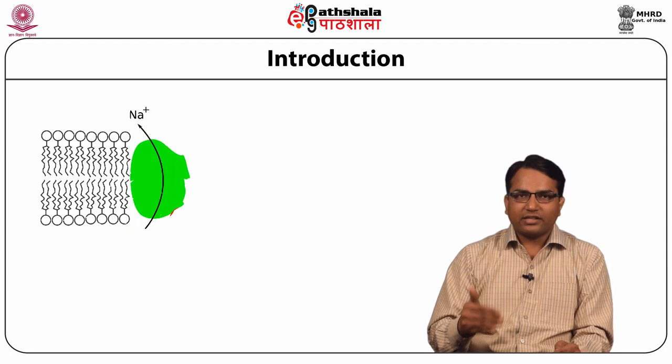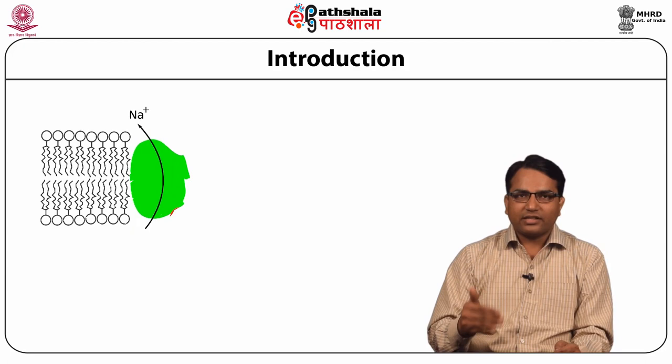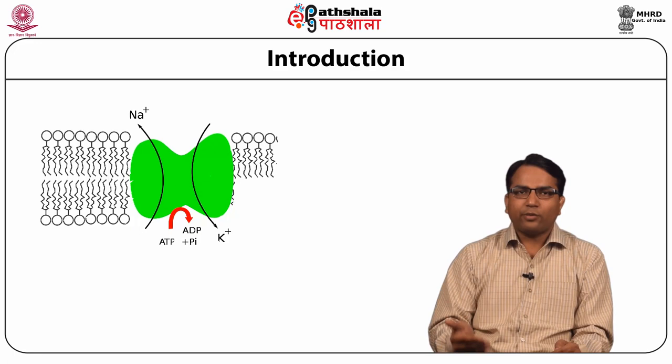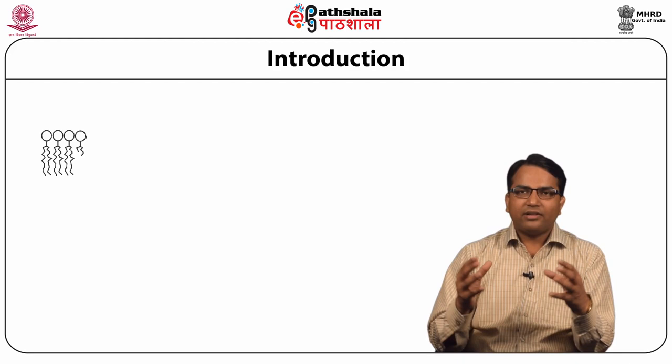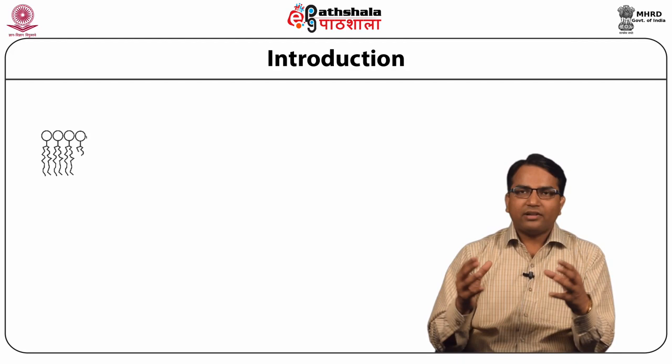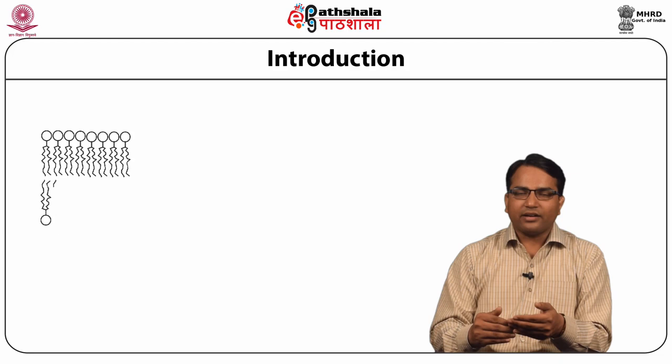After action potential, the cell membrane returns to its resting potential. For measurement of the cell membrane potential, the reference point is always outside the cell. The membrane has a negative charge based on the difference in ion movement. After stimulus we have action potential and again the resting potential is generated.